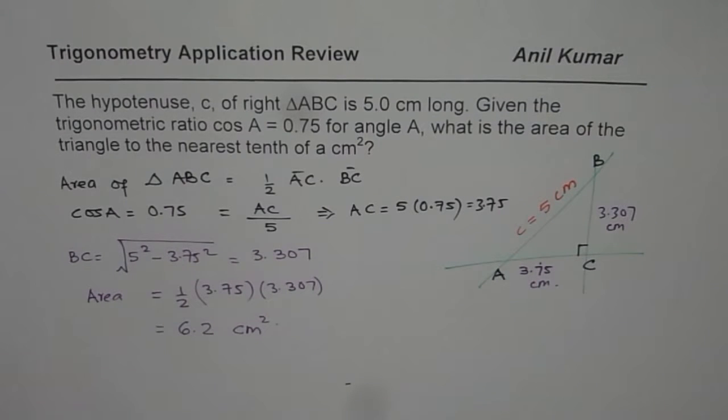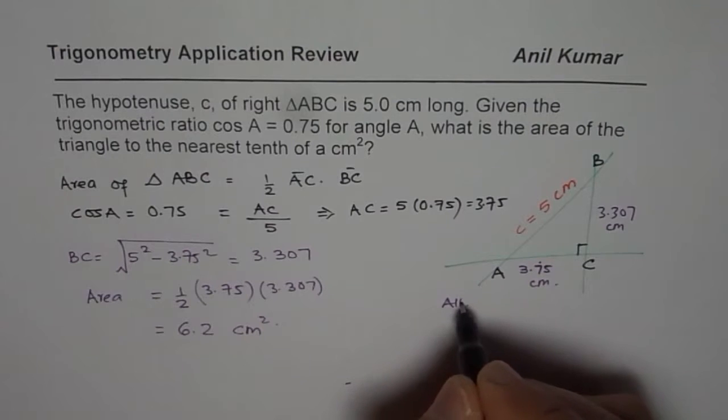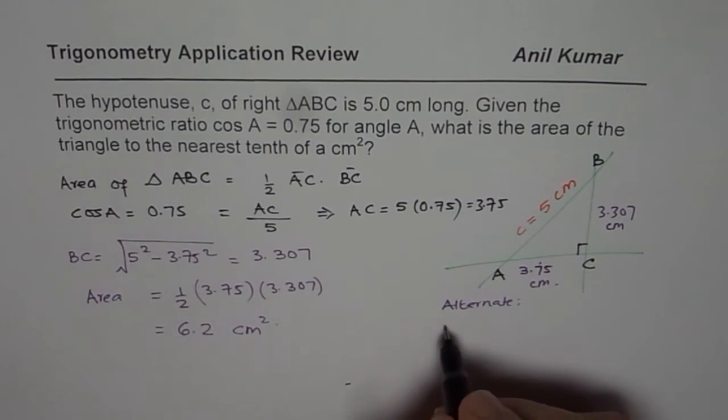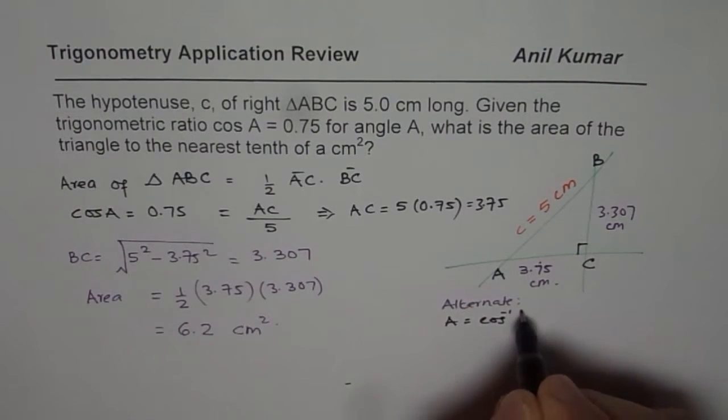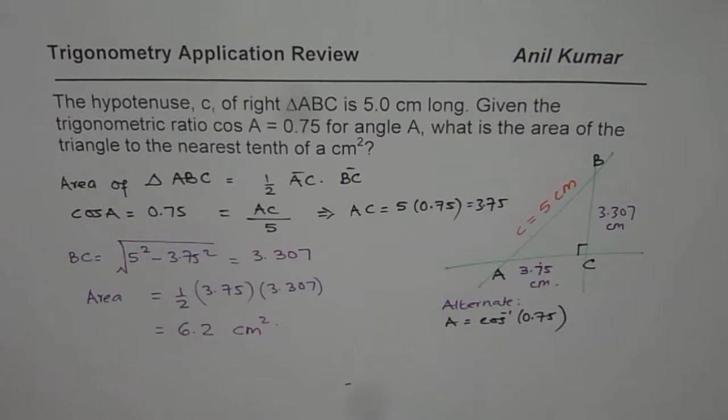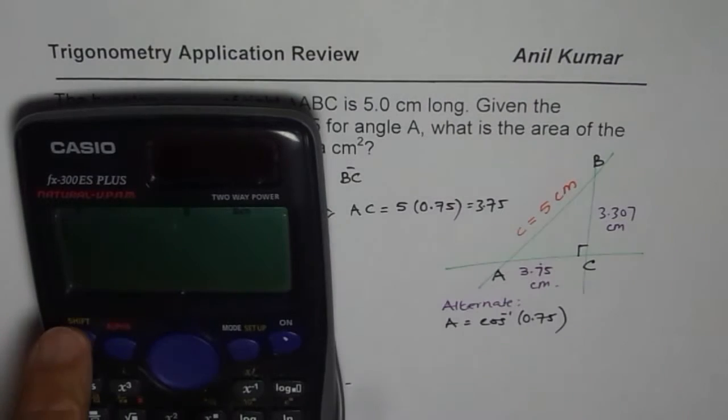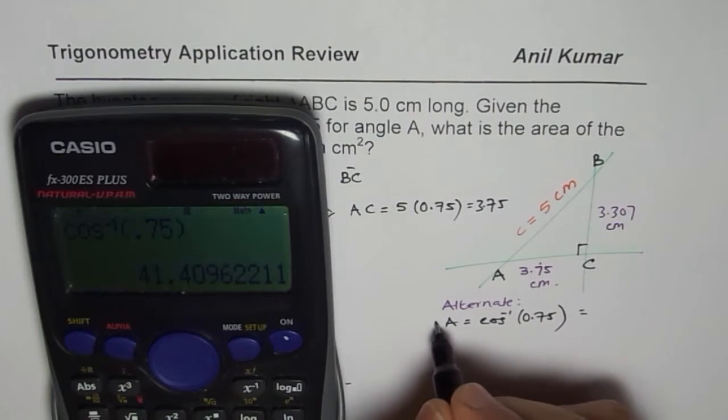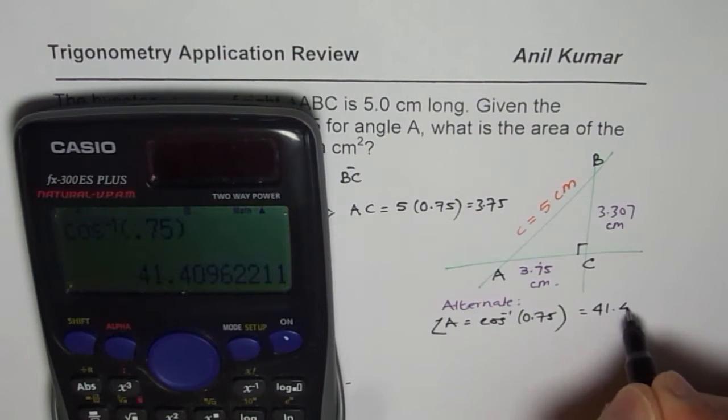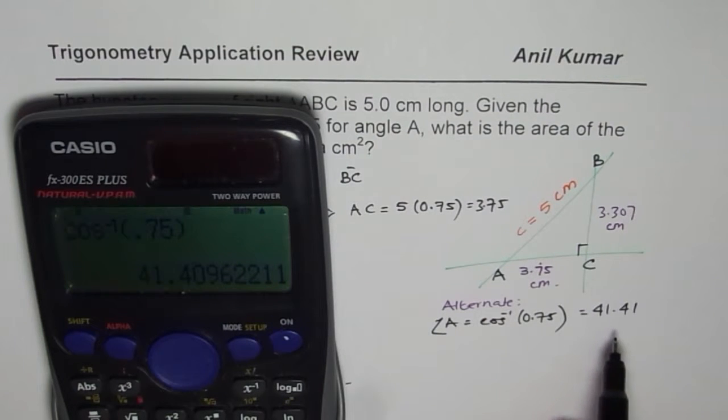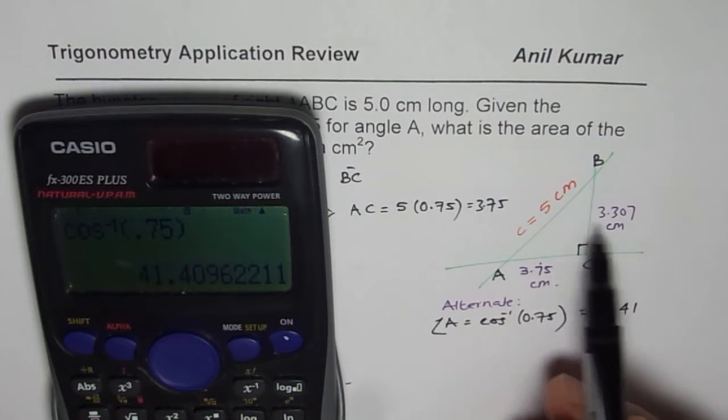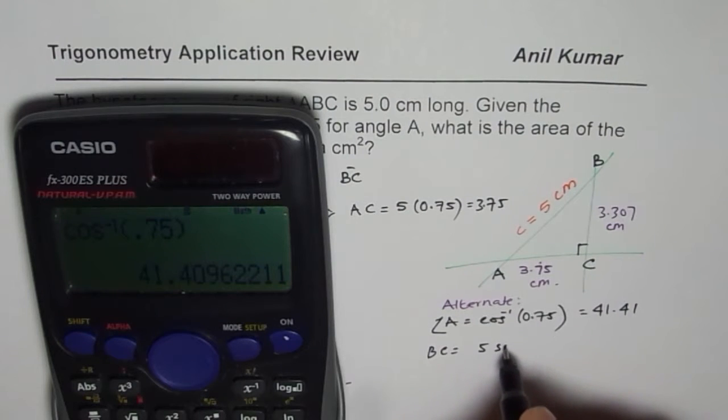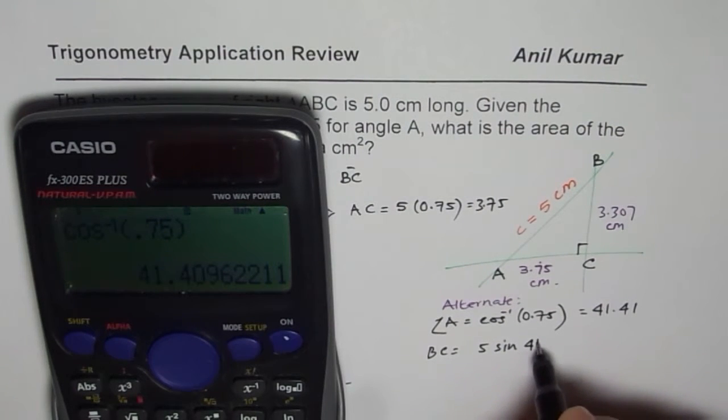What you could also do is an alternate method. Once you know cos A, we have A equals cos inverse of 0.75. You can find angle A. So let us say you get angle A equals 41.41 degrees. Now once we know this angle then we can find BC using 5 times sine A.